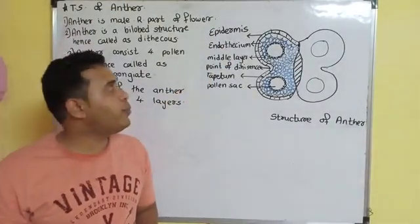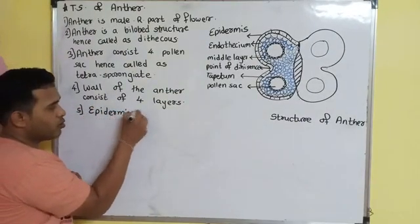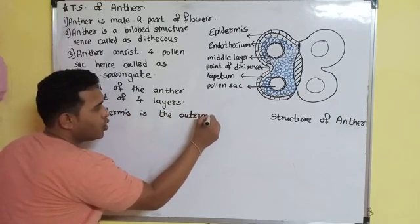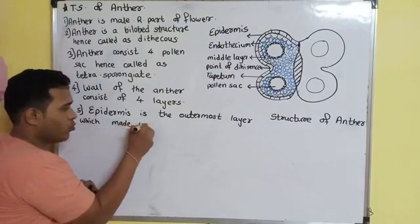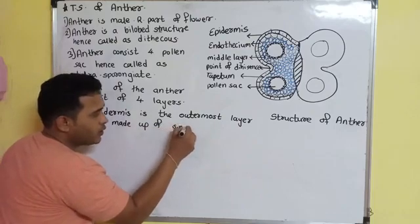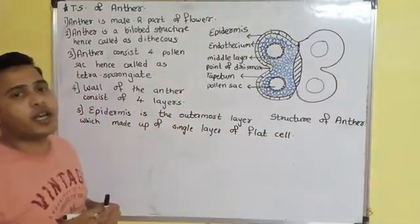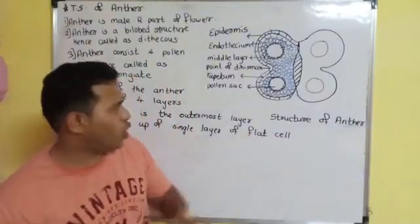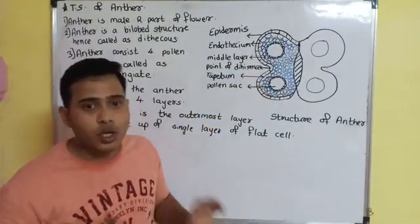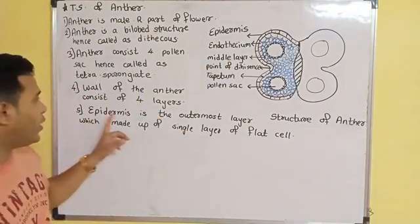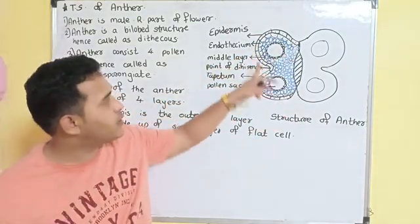The outermost layer is the epidermis. Epidermis is the outermost layer which is made up of a single layer of flat cells. Its function is protective and nutritive. You can see that the flat cells are drawn, each cell has a nucleus at the center.